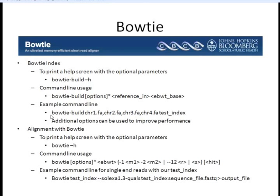Once we have the index, we need to align our reads using it with the bowtie program. The command takes all your options, then the sequence — you can align single-end or paired-end reads — and then your output directory. In the example, we call bowtie, give it our test_index, and specify that we want it to run as a quality-aware aligner. The '--solexa1.3-quals' flag is appropriate for newer Illumina data. Then we provide the sequence name and the output.